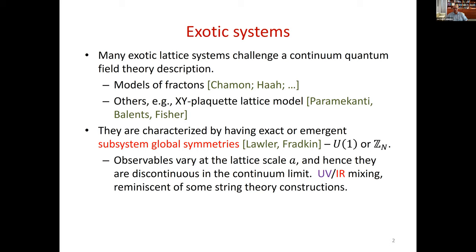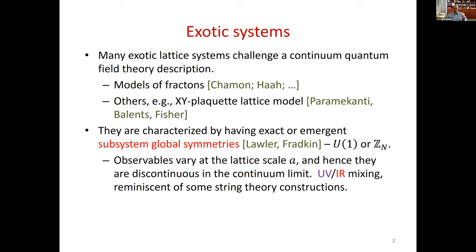Subsystem symmetry is sometimes presented in the literature as being in between global symmetry and gauge symmetry. This is really misleading — these are special kinds of global symmetries. The Hilbert space is in the representation of this symmetry, unlike a gauge symmetry. The operators can transform under this symmetry, unlike a gauge symmetry. Throughout the talk, I'll talk mostly about U(1) subsystem symmetries, but the extension to Z_n is more or less straightforward. The advantage of U(1), as opposed to discrete symmetry, is that the global symmetry is associated with a Noether current, so we can discuss everything locally.